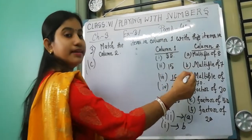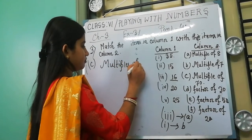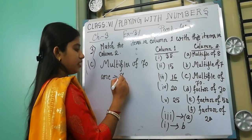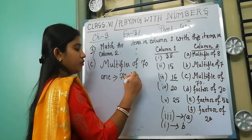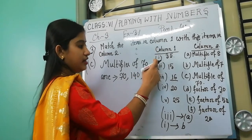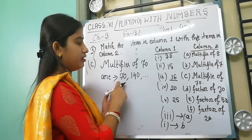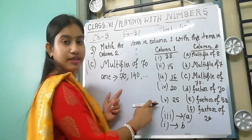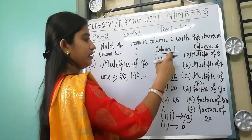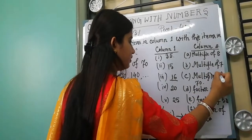Number C: multiple of 70. We find multiples of 70. 70×1=70, 70×2=140, and so on. But in column 1, the highest number is 35, and multiples of 70 start from 70. So there is no number in column 1 that matches C.